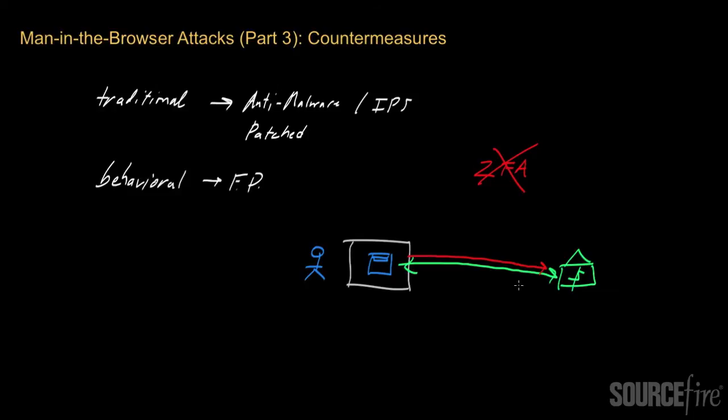So instead, what banks and organizations have done is employed other mechanisms for trying to detect these types of man-in-the-browser Trojans. First of all, one mechanism that a lot of banks have employed, and this is maybe a bank-side mechanism, is to use what's known as out-of-band, or OOB, out-of-band transaction confirmation.